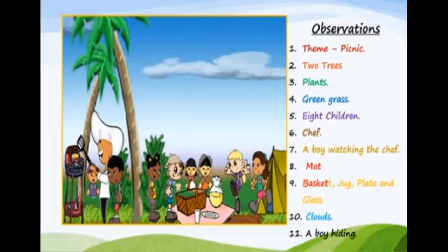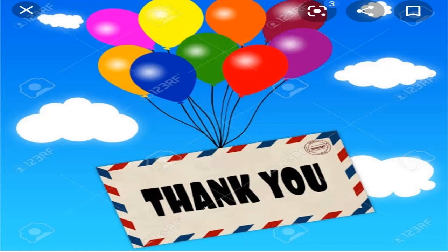Now, look at this beautiful picture. What your observation is showing, you have to write. This is a picnic. So, the theme of the picture is picnic. You can see two trees and plants, green grass. On the basis of the given picture, you have to frame the sentences. I have already given you the hints for the picture. That's going to be fun.